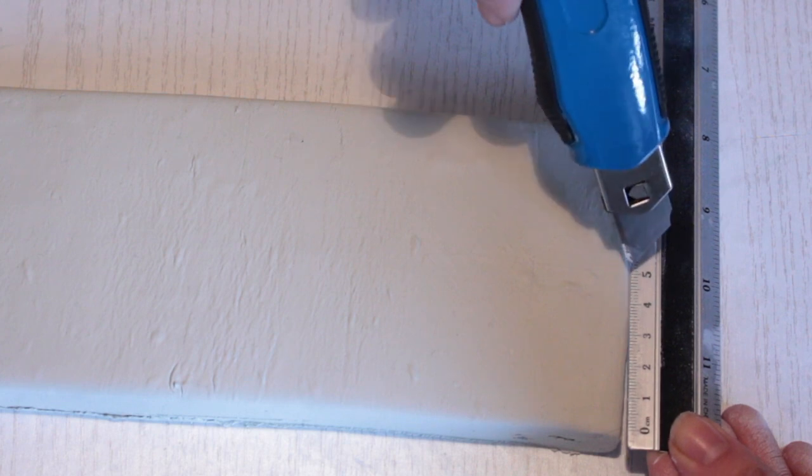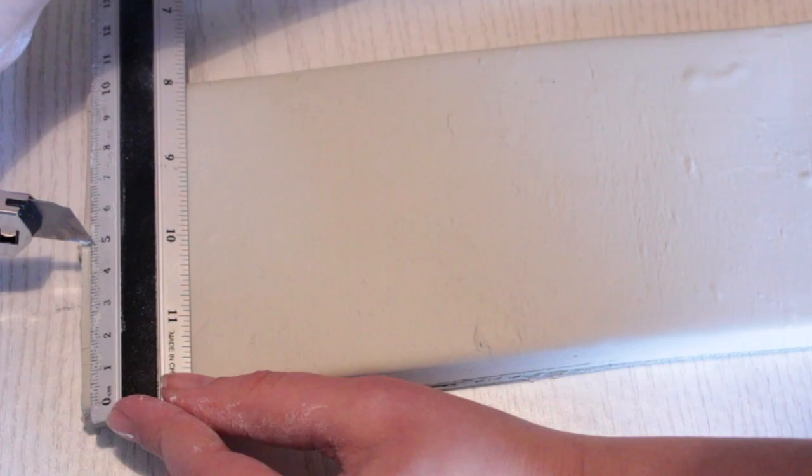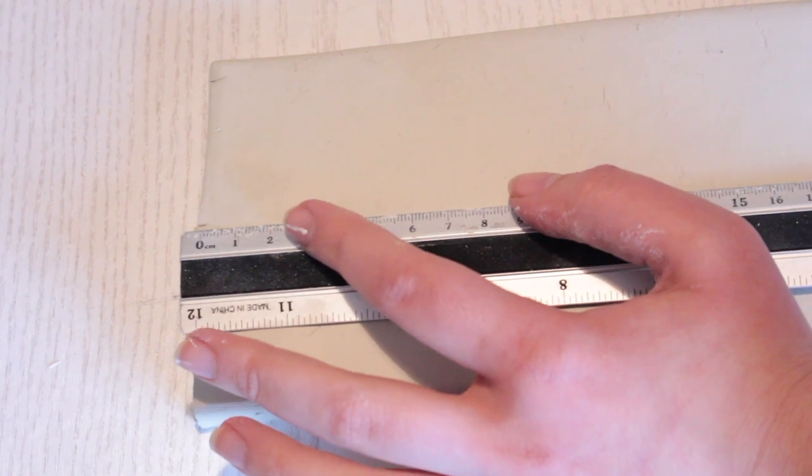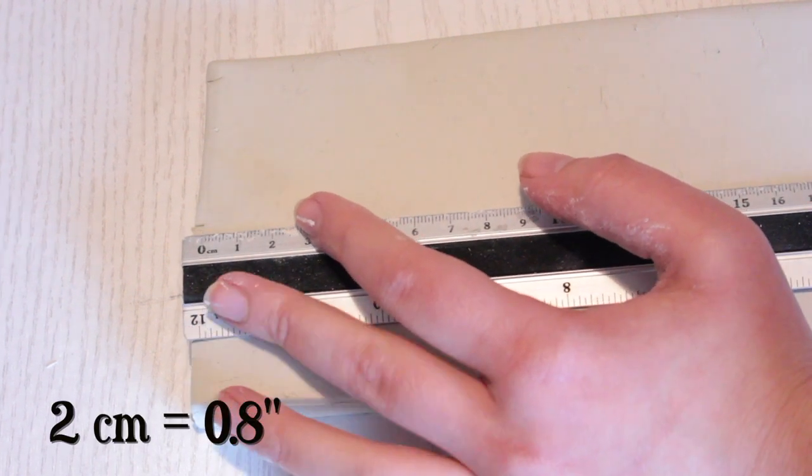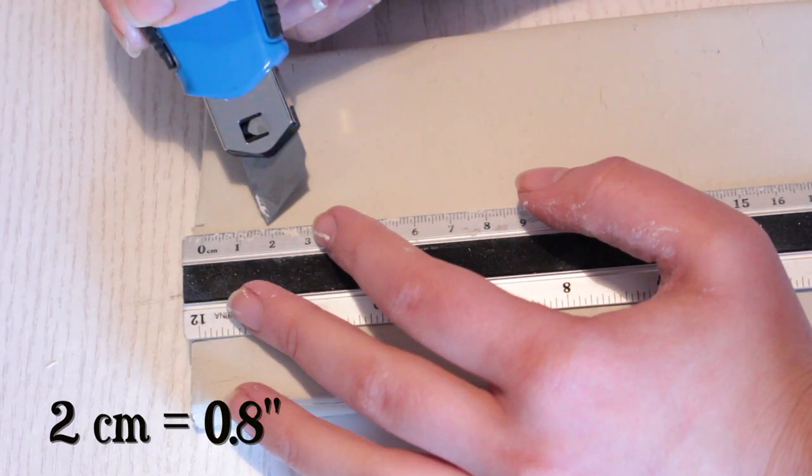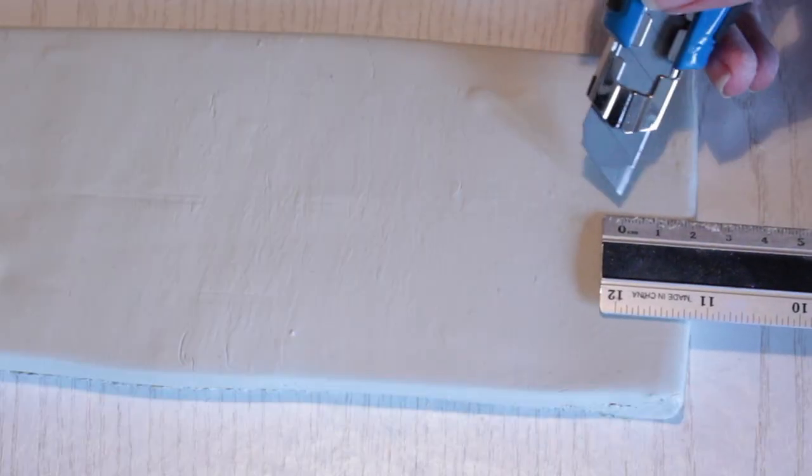Now find the middle on both ends and then make a teeny tiny mark with your box cutter. From this mark, measure inwards 2 cm and then make another tiny mark. And do the same thing on the opposite side.